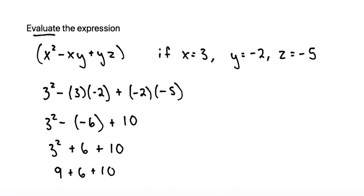From here, we have only additions we can just add straight across. 9 plus 6 is 15, plus 10 more is 25. So the final answer would be 25.